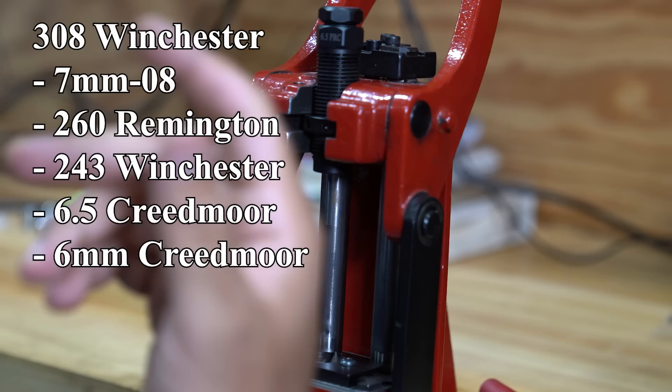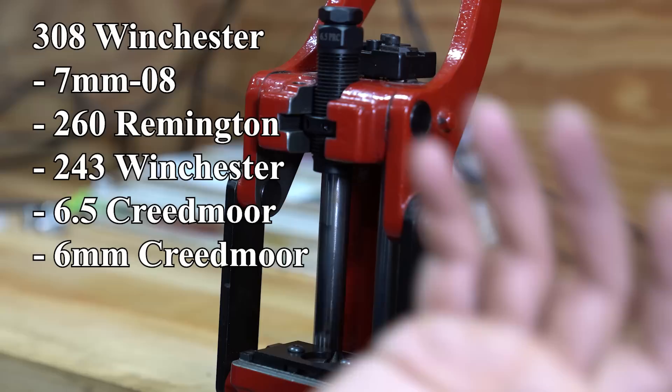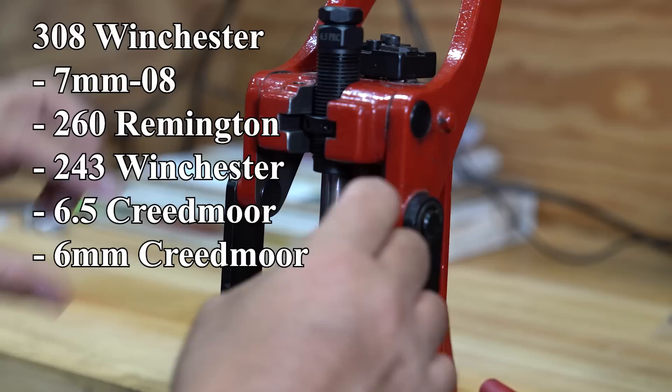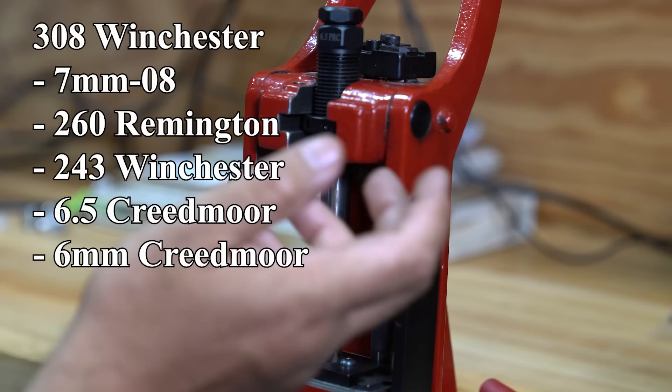Obviously, the .308 Winchester, you can use with .308, .708, .260, .243. 6.5 Creedmoor, it's going to be the same die. Because the 6.5 Creed is slightly shorter. So the mandrel is long enough that it's still going to hit the neck.